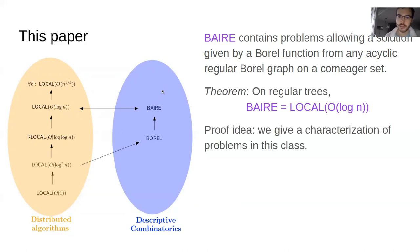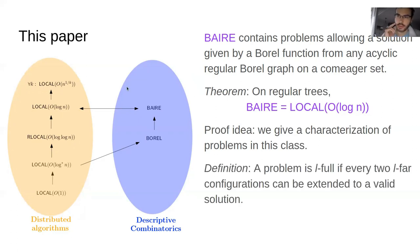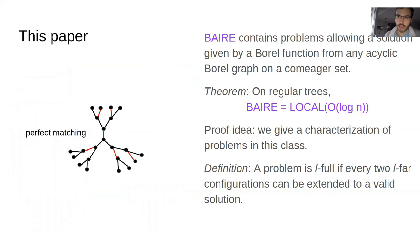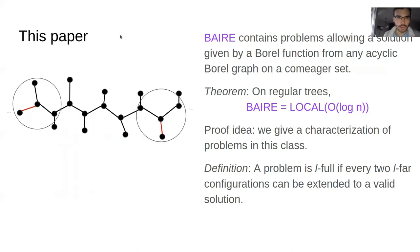Let me give you a glimpse of how a result like this can be proven. We are lucky because it turns out both classes have a nice combinatorial description. We say that a problem is l-full if every two sufficiently far-apart configurations can be extended to a global solution. Going back to our example of perfect matching: suppose I give you a regular tree, highlight two vertices, and give you a partial perfect matching solution around each vertex — say, I take this edge and that edge into the matching. I then ask whether these two partial solutions can be extended to a solution on the whole tree.